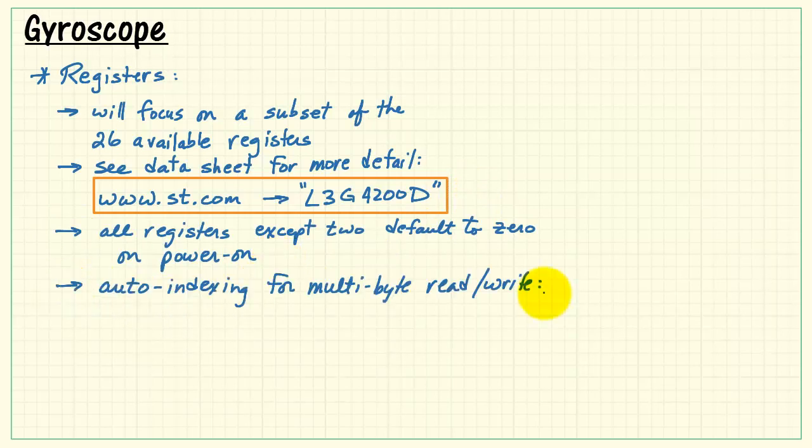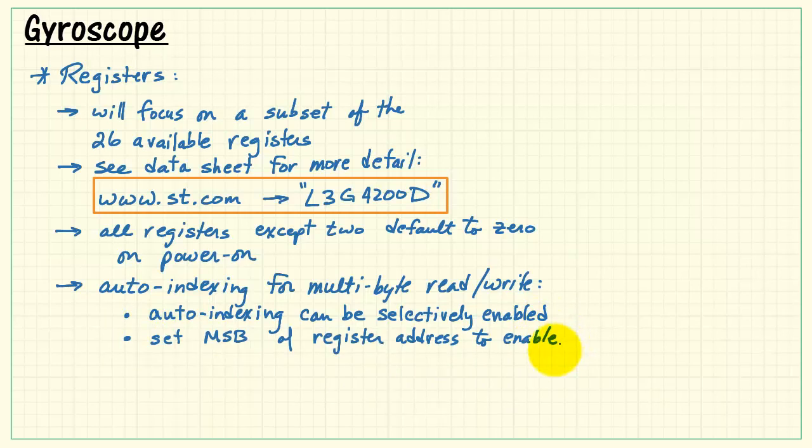All the registers except 2 default to 0 on power on. Autoindexing is supported for multibyte read-write, and it is selectively enabled. And the way you would do this is by setting the most significant bit of the register address.